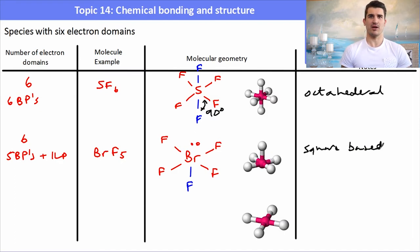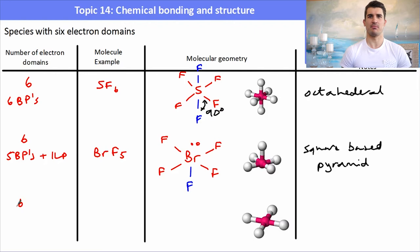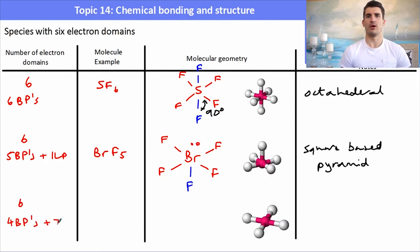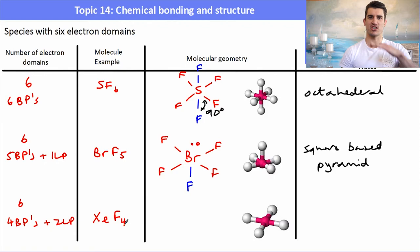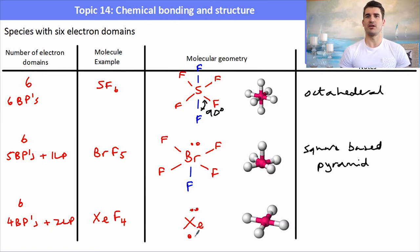The last arrangement with 6 electron domains is 4 bonding pairs and 2 lone pairs. An example is XeF4, where the 2 lone pairs are above and below the plane and the 4 fluorines are in the same plane. This is known as square planar, with all bond angles at 90 degrees.